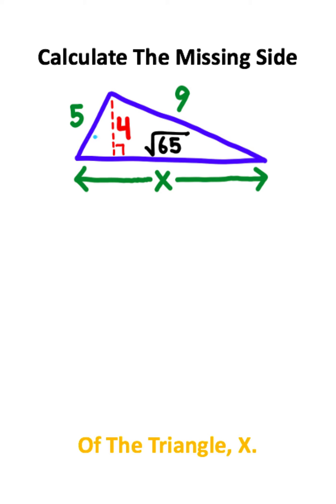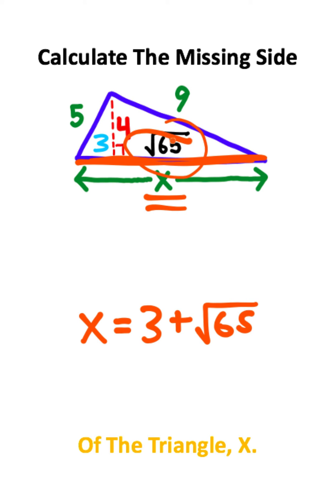This is a famous right triangle, known as the 3-4-5 right triangle. If we're solving for the missing side x, it's going to be 3 plus the square root of 65. This is the answer to the problem.